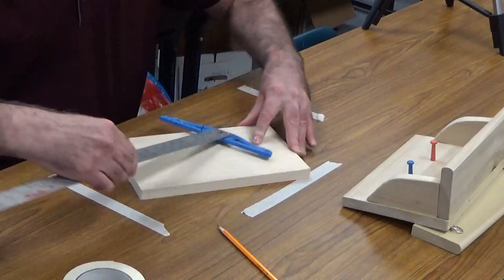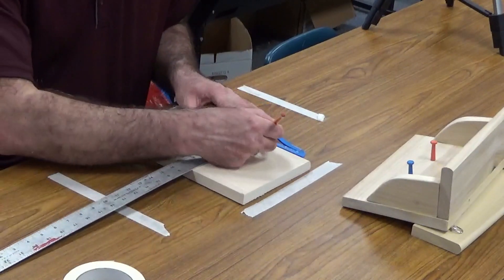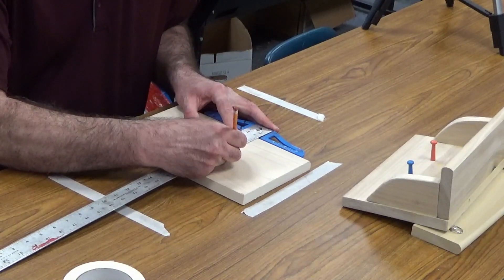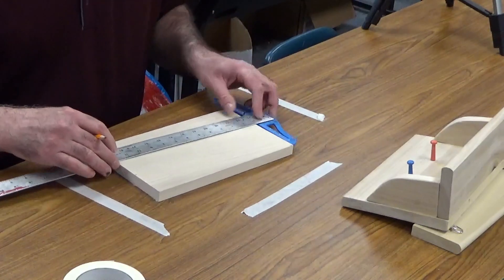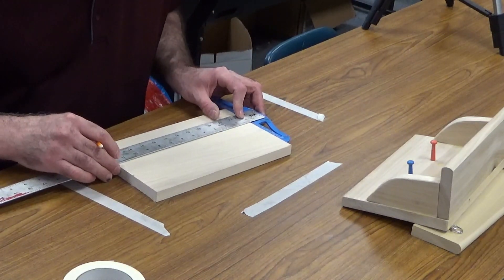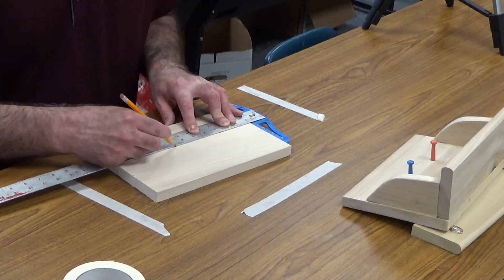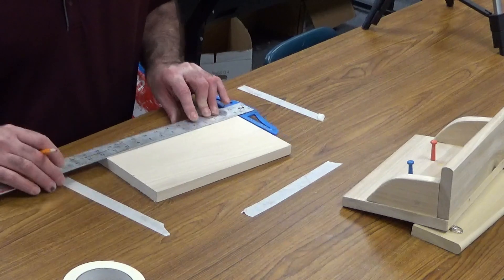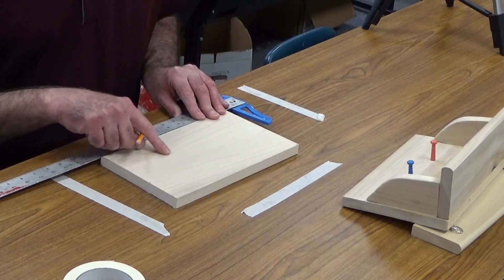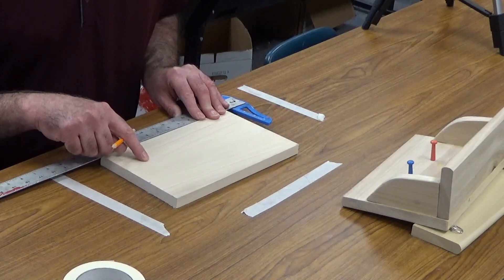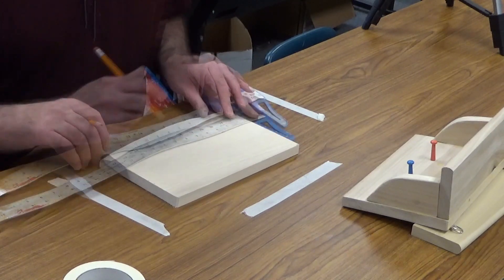You're going to get a t-square and measure three inches up from the bottom and make a mark. Remember you have to get rid of any pencil marks you make, so very lightly make a mark. Three inches up from this edge, there is a line.